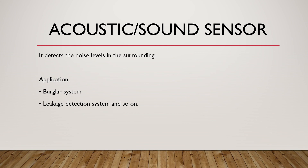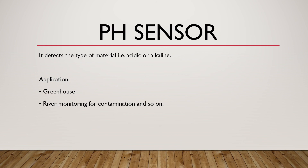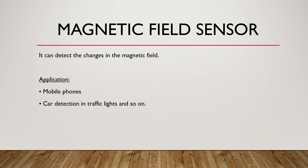Acoustic or sound sensor: detects noise levels in the surrounding. Used for burglar systems and leakage detection systems. pH sensor: detects whether a material is acidic or alkaline. Typically used in greenhouses or river monitoring for contamination. Magnetic field sensor: detects changes in the magnetic field. Used in mobile phones, and for car detection in traffic lights.